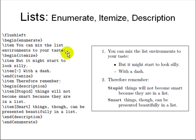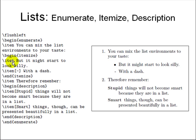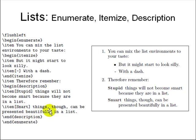You need commands to generate lists: enumerate, itemize, and description. Enumerate means numbered — 1, 2, 3. Itemize means bullet points or dots. You put a backslash item and write something — it will put a dot. You can nest lists or put a dash as an optional argument to get a dash instead of a bullet. Description is a begin/end description environment where you put a word in brackets after item — that word is defined in the sentence following it.